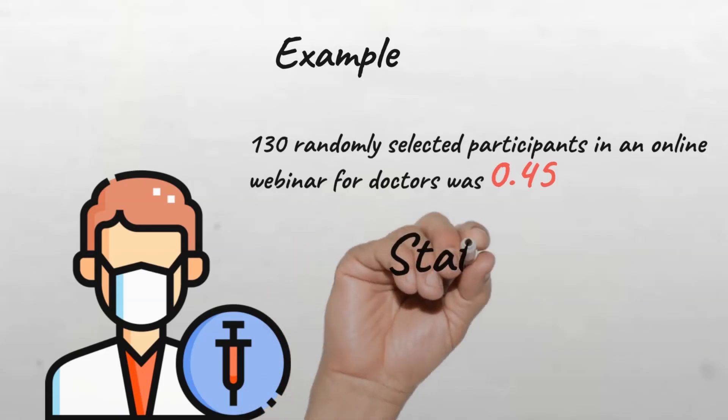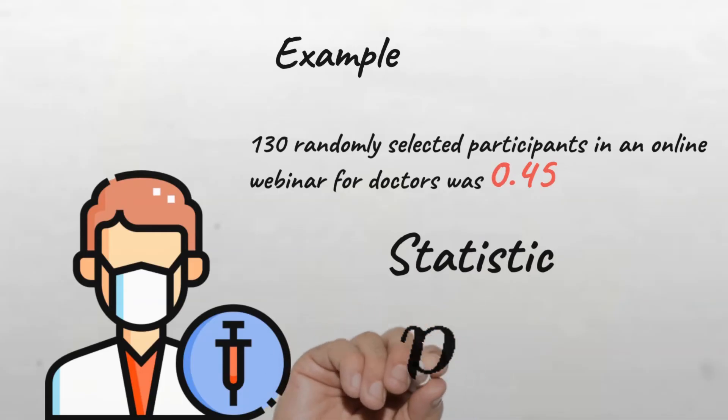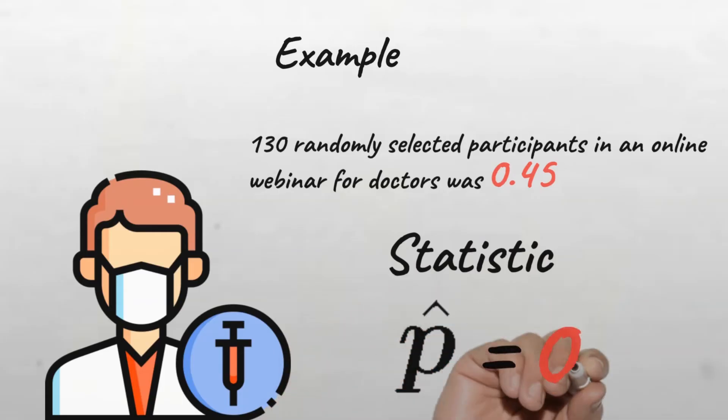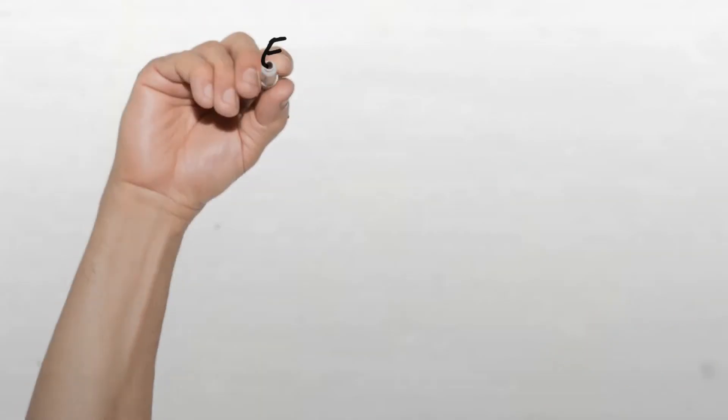This is a statistic because we can clearly see that the data used was obtained from a sample, so this will be denoted by p hat. Here we can say p hat equals 0.45, and anybody seeing this knows we're referring to a statistic.